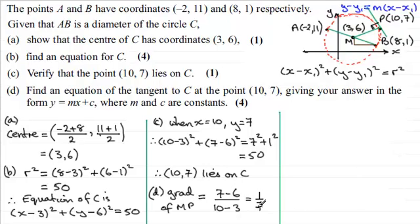Now that we've got the gradient of MP, we can say that the gradient of the tangent - I'll put grad of tangent - well using the fact that the product of the gradient should equal -1 because they're perpendicular, then all we do is we switch the sign on the 1/7, so it was a plus it's now a minus, and turn the fraction upside down, so it's 7/1 or just simply -7. If you multiply these two together you will get -1. So the gradient then of the tangent is -7.